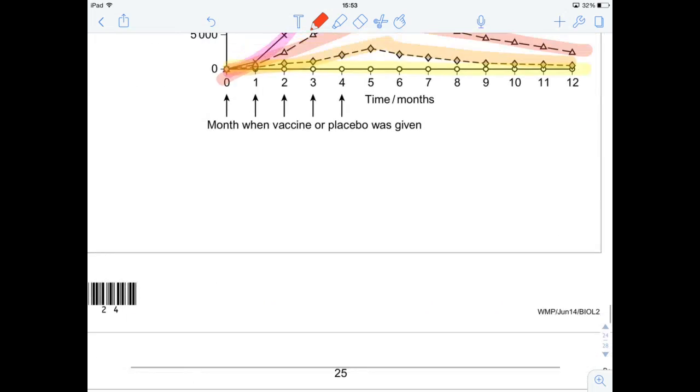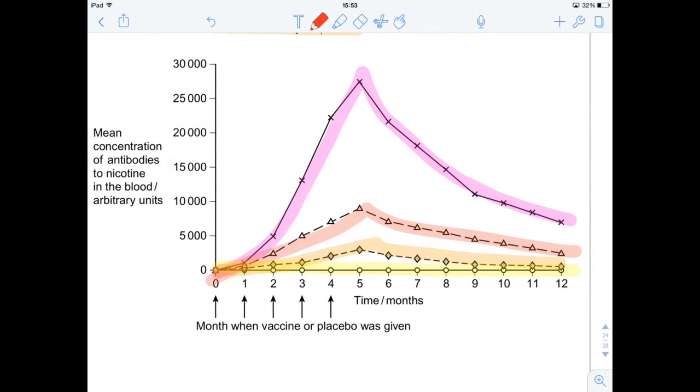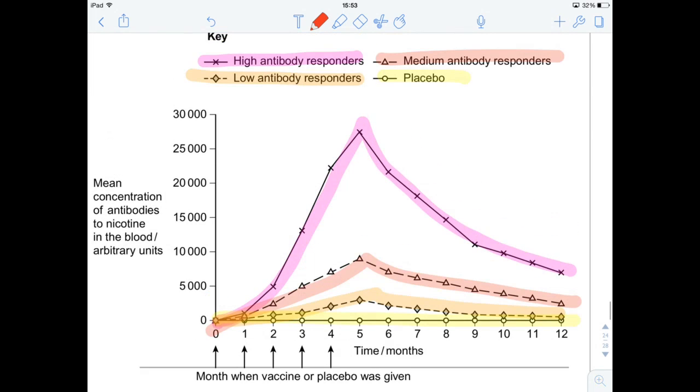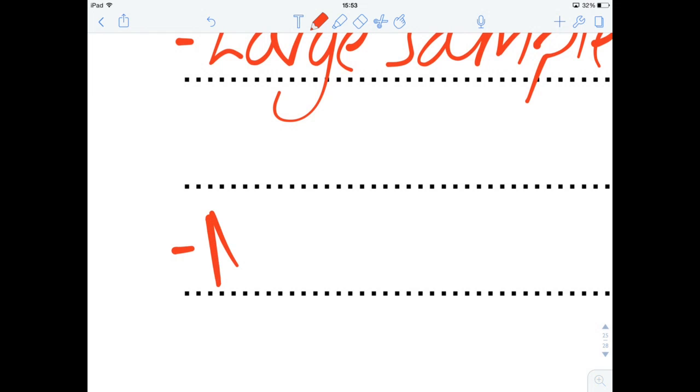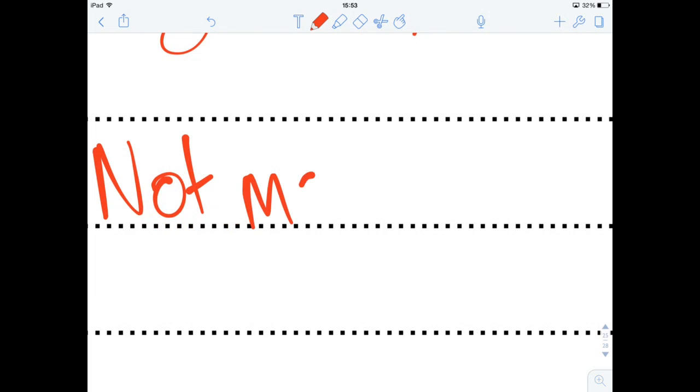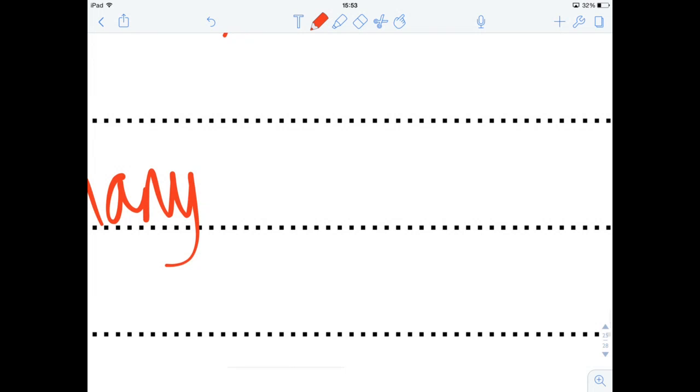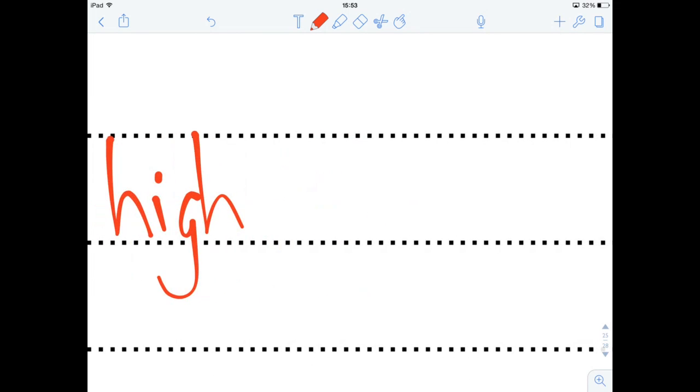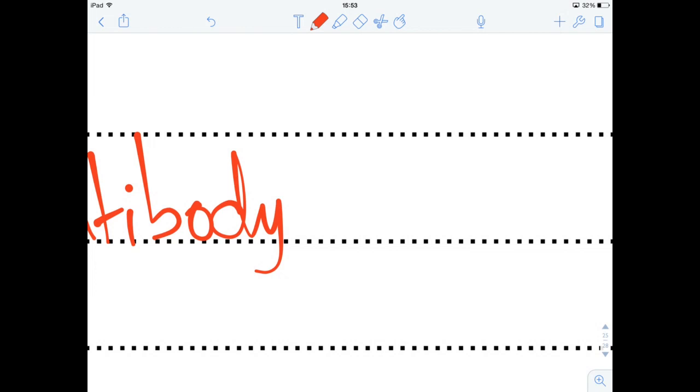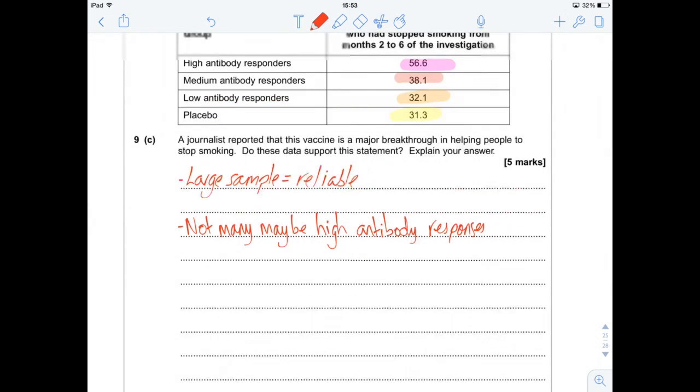So, just because these high antibody responders showed really, really good results, doesn't mean, there's no information about how many people were high antibody responders. So, not many may be high responders, high antibody producers. So, we don't know the distribution of people within those groups.